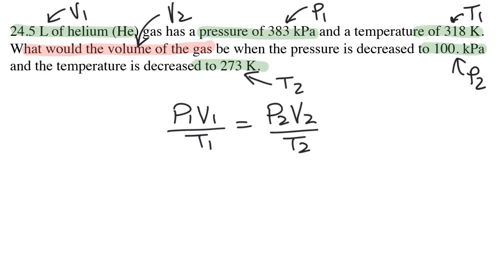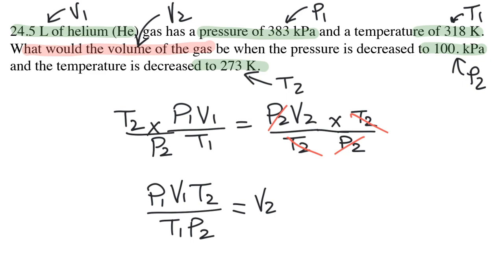So first I'll multiply by T2 to cancel the T2 on this side. Whatever I do to one side of the equation, I have to do to the other. Then I'll divide by P2 to cancel it on this side. Then I'll divide the other side by P2. And so my equation becomes P1V1T2 over T1P2. That's equal to V2.